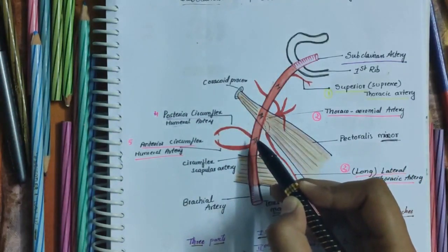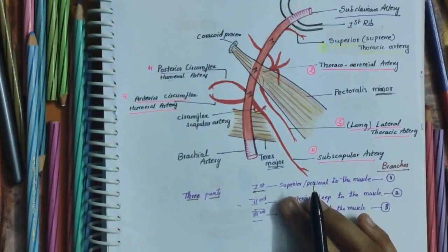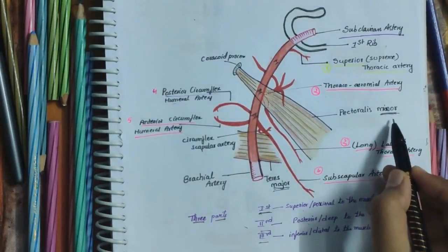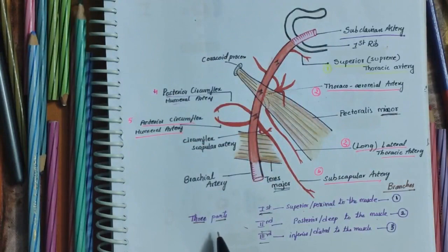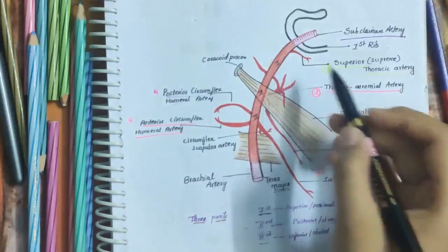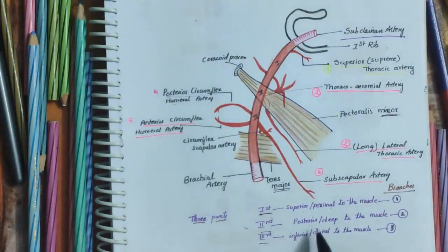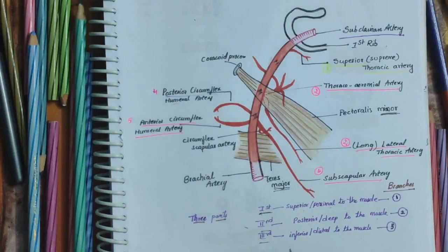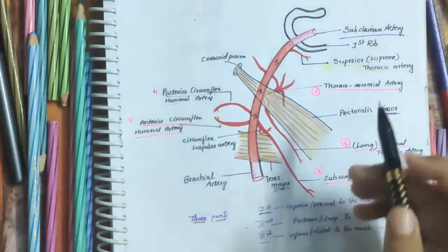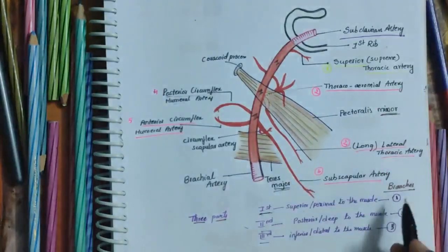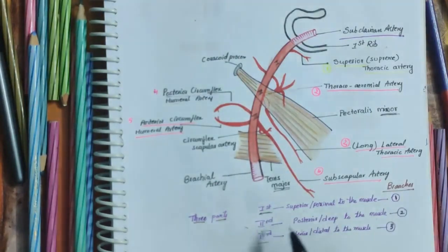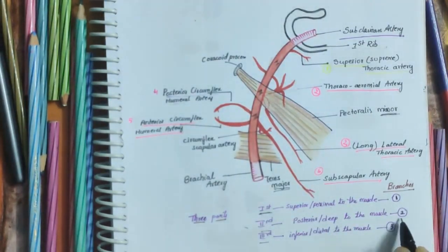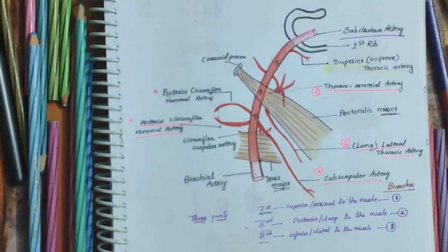The axillary artery is divided into three parts by the pectoralis minor muscle, which runs from the coracoid process to the thorax. The first part is superior or proximal to the muscle. The second part is posterior or deep to the muscle. And the third part is inferior or distal to the muscle. Each part gives branches: the first part gives one branch, the second part gives two branches, and the third part gives three branches.